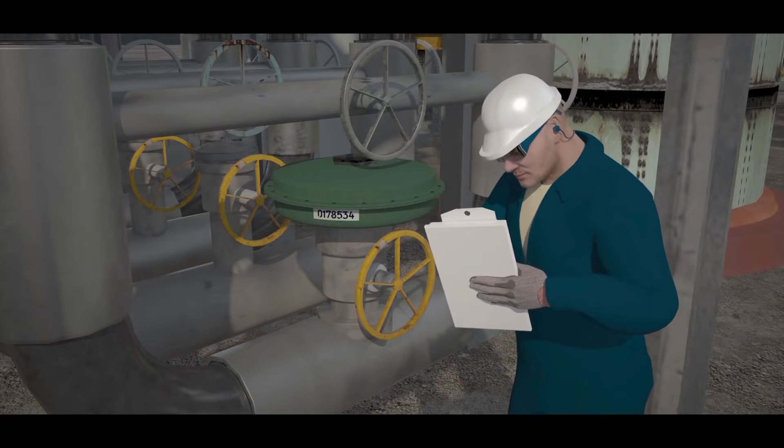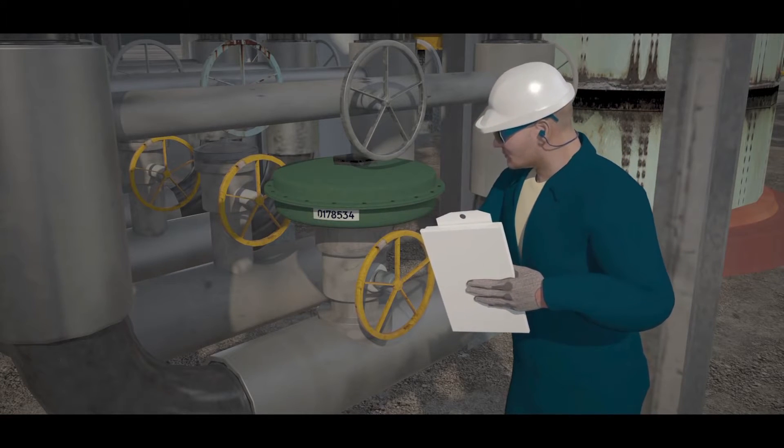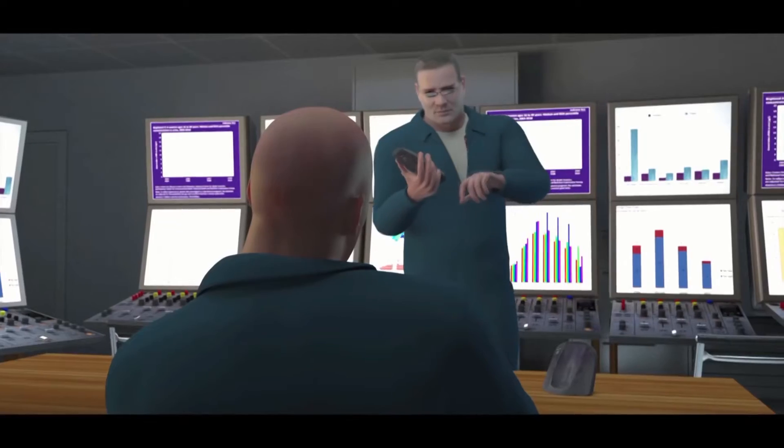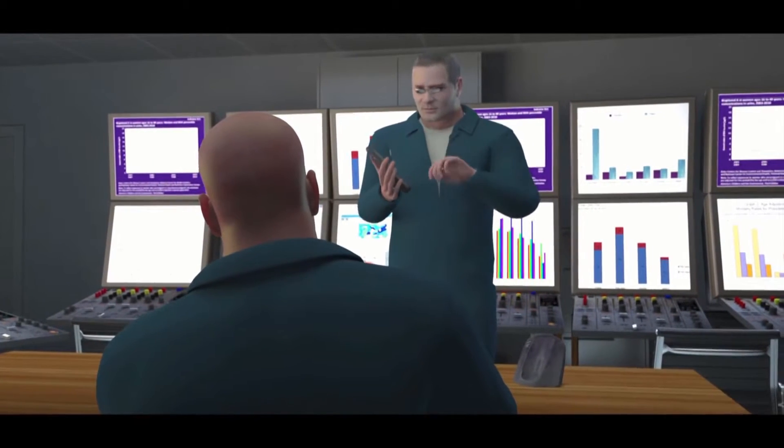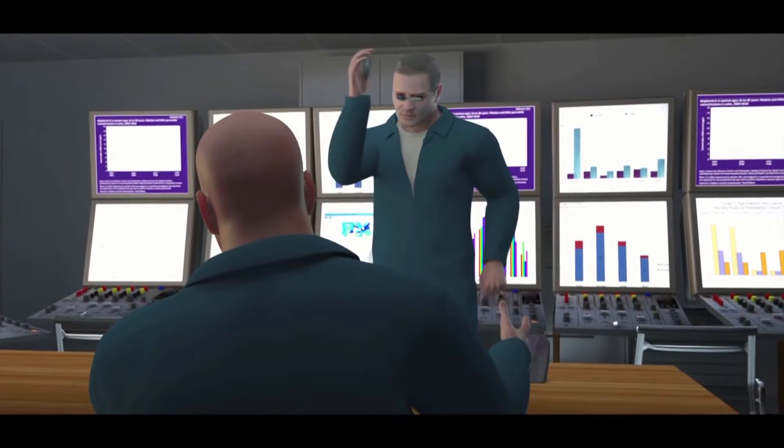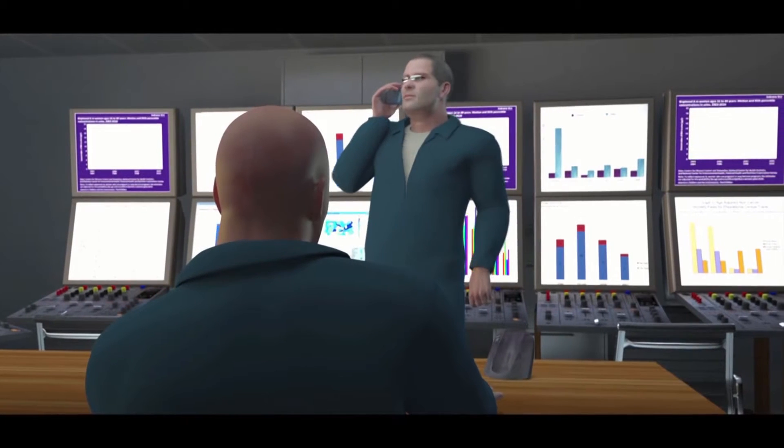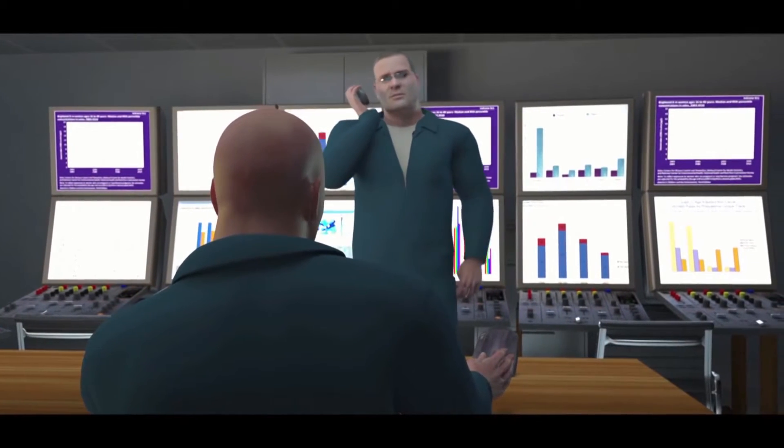He went into the plant to evaluate the water flow rates. The operations supervisor informed several personnel that fouling within the operating reboiler could be the problem, and they might need to switch the reboilers. He attempted to meet with his manager so they could get the necessary maintenance and operations personnel involved, who would perform the work. But his manager was not available.